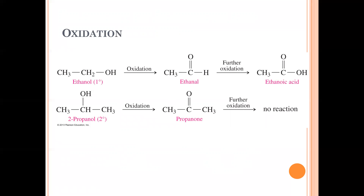To summarize the oxidation sequence: primary alcohol → aldehyde → carboxylic acid. Secondary alcohol → ketone → cannot oxidize further (end of the line). Tertiary alcohols cannot oxidize at all. Know this sequence well.